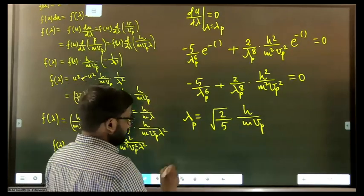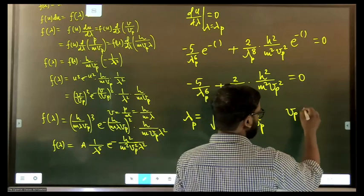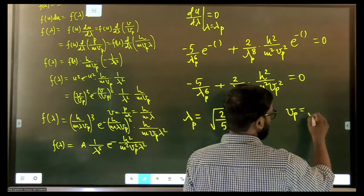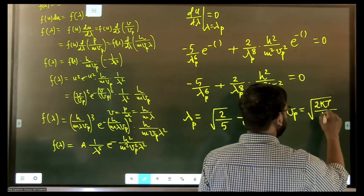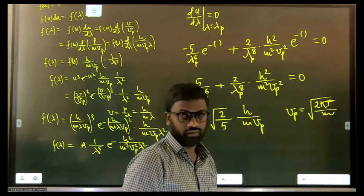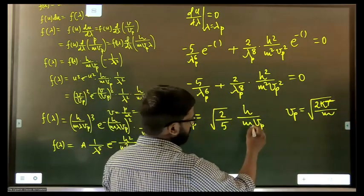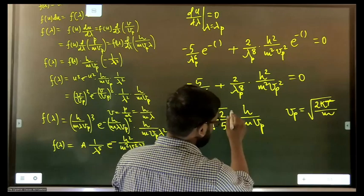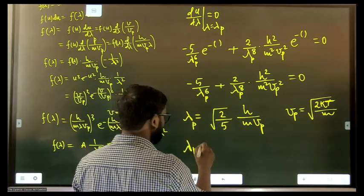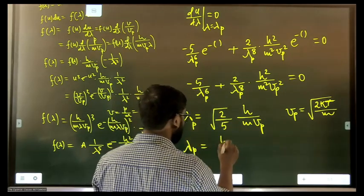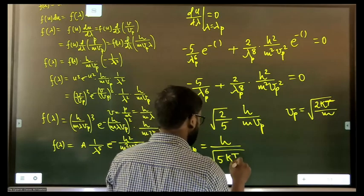Now we substitute the value of vp. The most probable speed is given as vp = √(2kT/m). Substituting this, the factor of 2 cancels, giving λp = h/√(5·m·k·T).